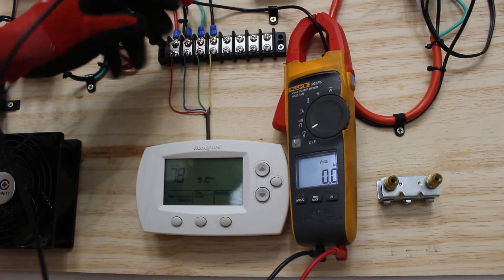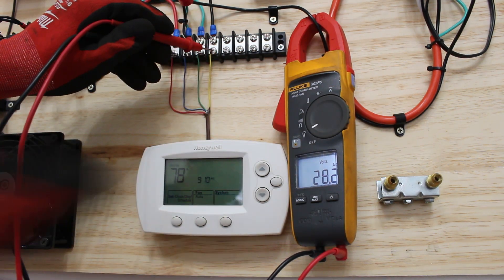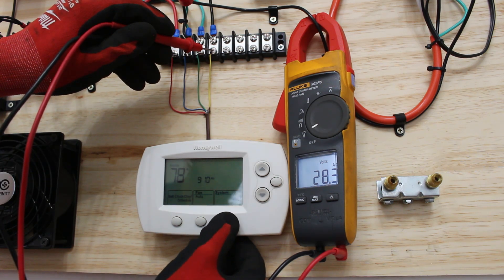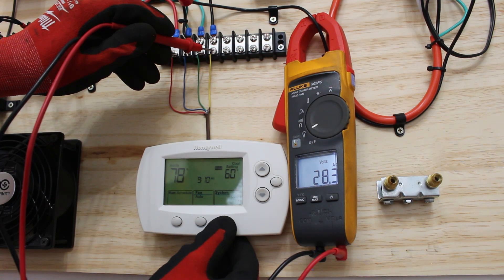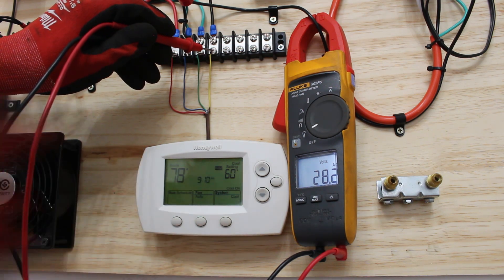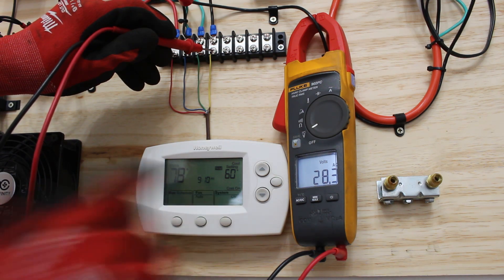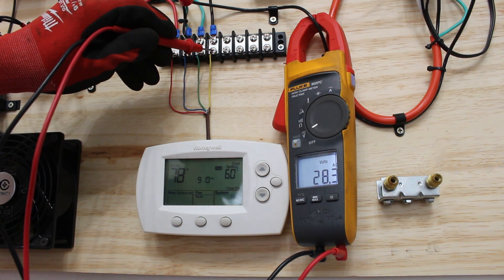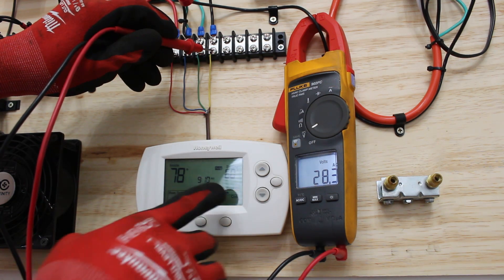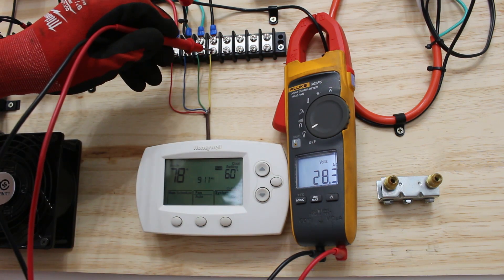When we set the thermostat to cooling, Y will close with R and G will close. So let's go ahead and put the system on cooling. We already know what happens with G so I'm going to show you what happens with Y because that is our cooling wire. Right now we have 28 volts, circuit is open. We're going to set it to cooling. Set the temperature below the room temperature and watch the voltage. Right there, there is a cool on blinking, that means that there is an internal time delay built into the thermostat. So once the cool on goes steady and our time delay passes we're going to see a voltage drop.